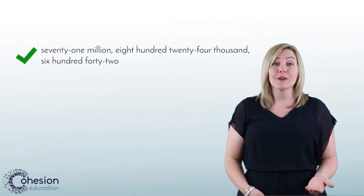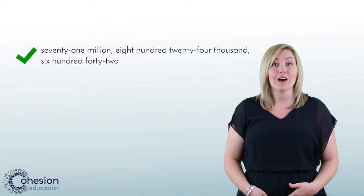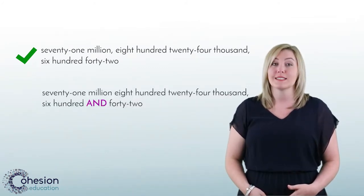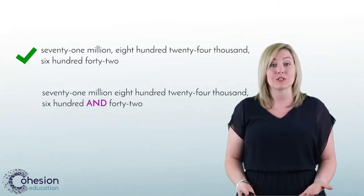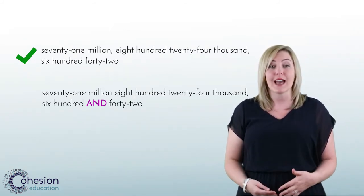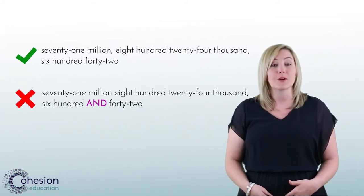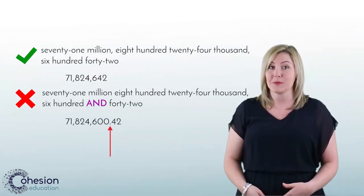A common error that can occur when understanding place value is how the word is read and written. For example, the number 71,824,642 is often read seventy-one million eight hundred twenty-four thousand AND six hundred forty-two. Many times when a larger whole number is read, we naturally add the word 'and' in towards the ending. This would make the form incorrect because the word 'and' read in math indicates a decimal point.